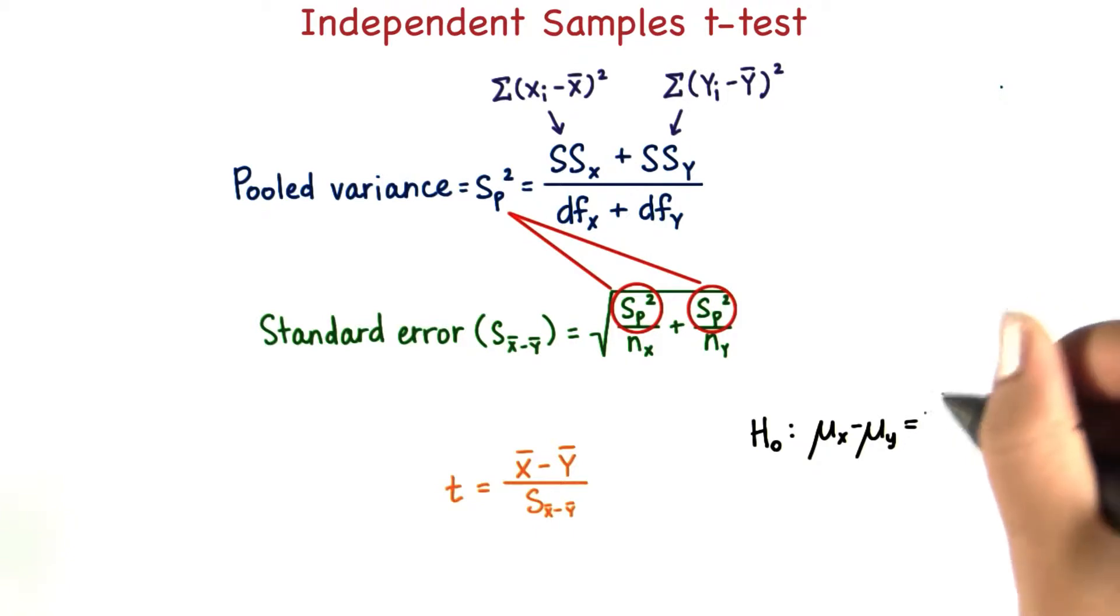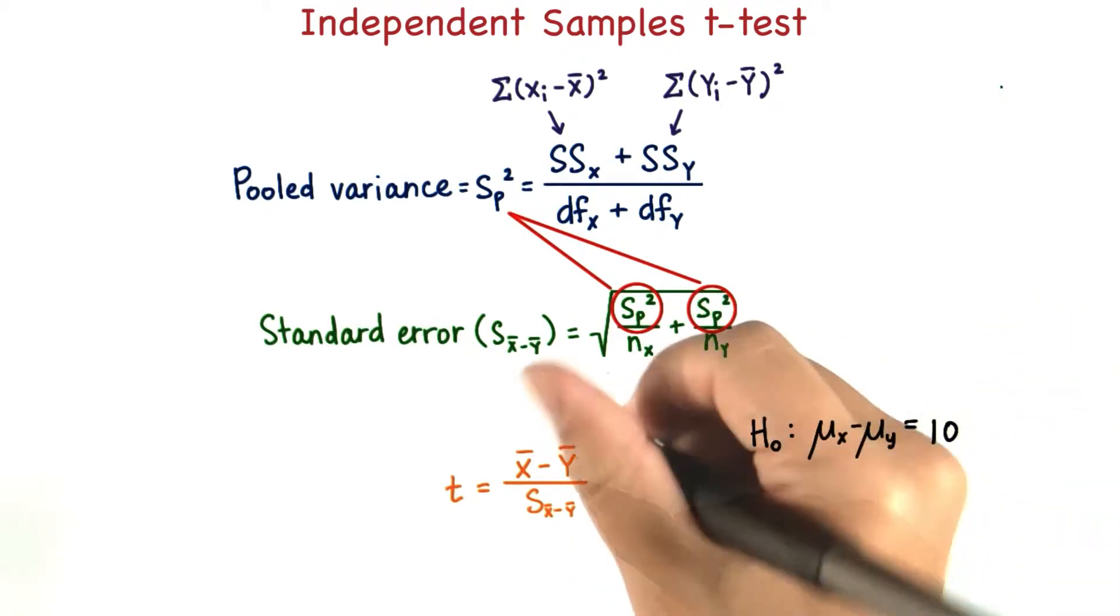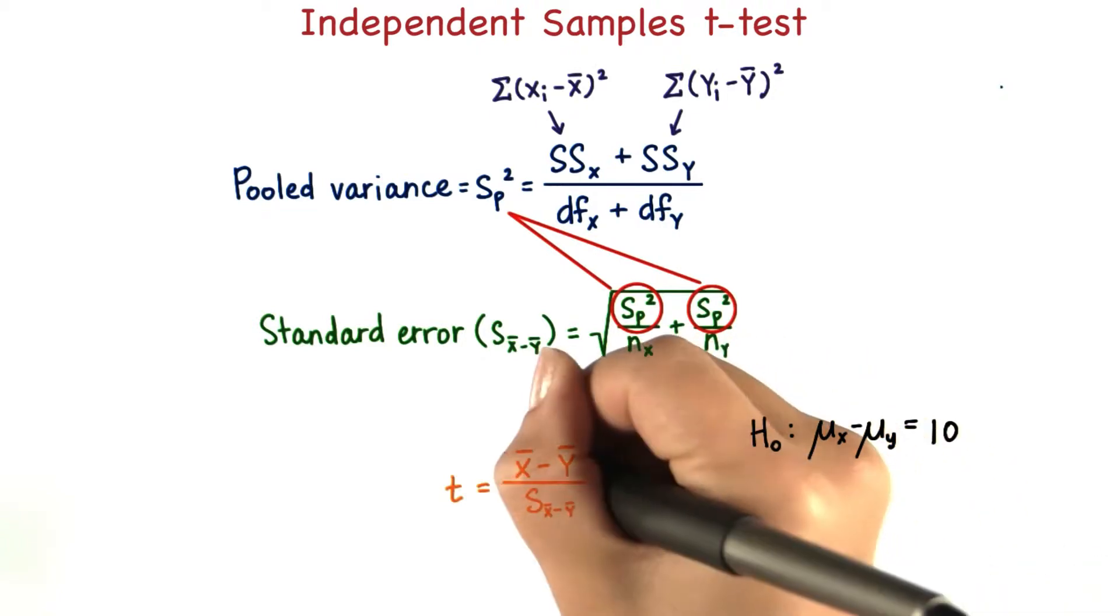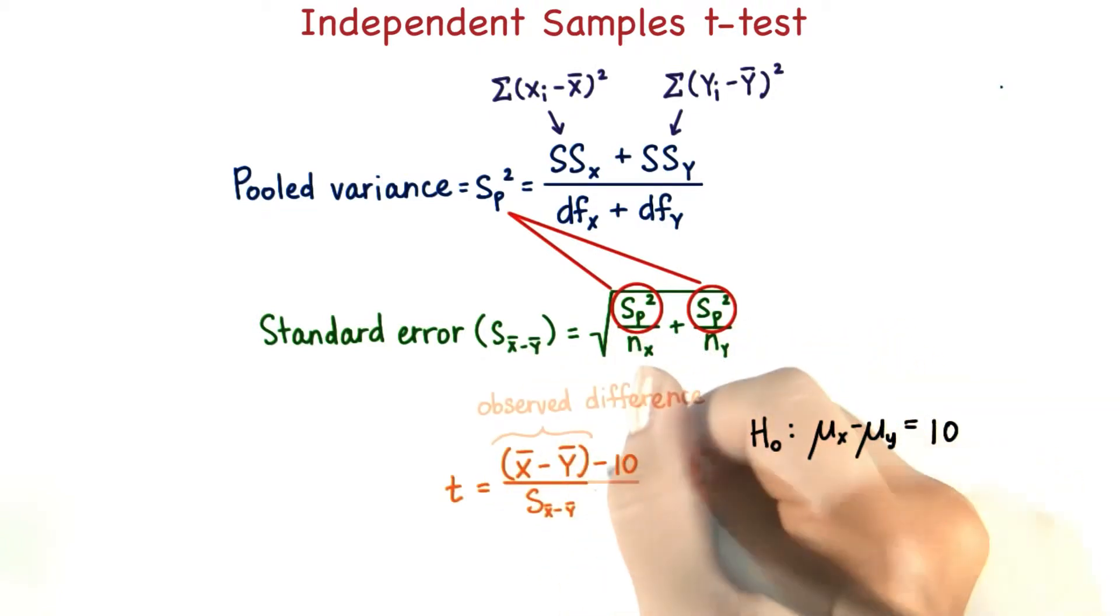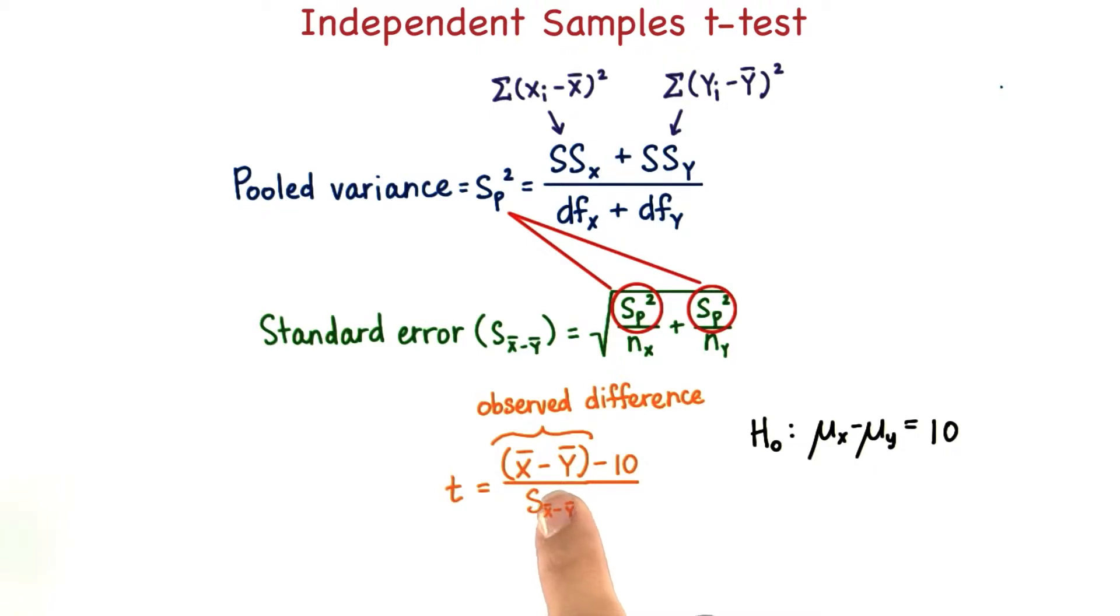But say we expect that the difference is equal to 10, for example. Then here, we would subtract this expected difference from the observed difference. And this observed difference is what we get from our sample. So this is our full t statistic for independent samples.